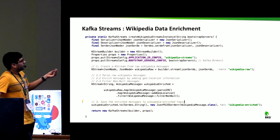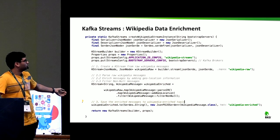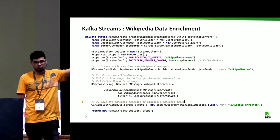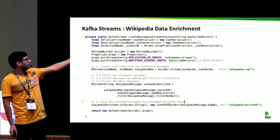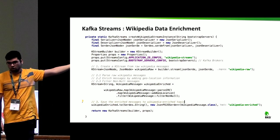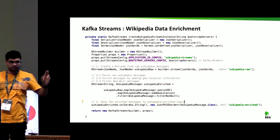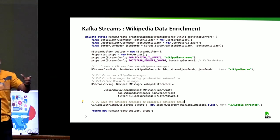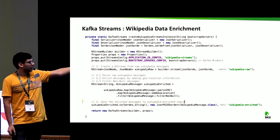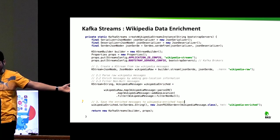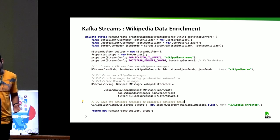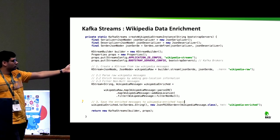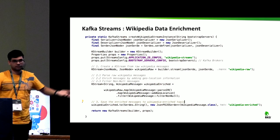For the Wikipedia edit stream, here is a simple code which does processing in three steps. The first step reads data from the Wikipedia raw stream and builds a Kafka Stream object. In the second step, it parses those events, matches them against a pattern, and parses them into a Java object named WikipediaMessage. Then it maps and processes these events, adds geolocation information, and filters any events that are null or have empty strings. Finally, it produces those events to a Wikipedia enriched topic, from where our data store can now consume those events.